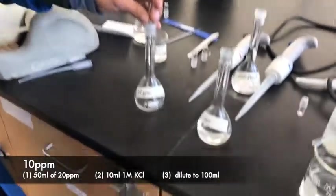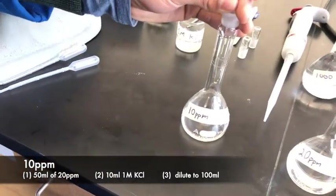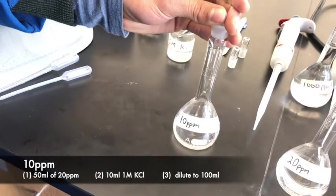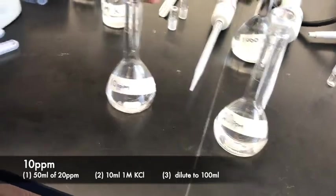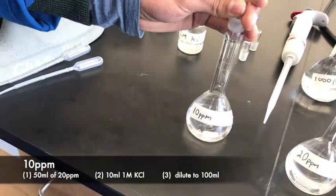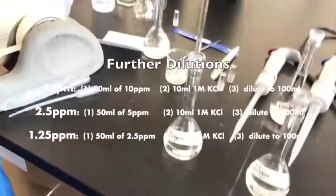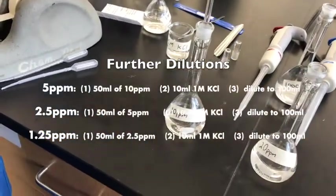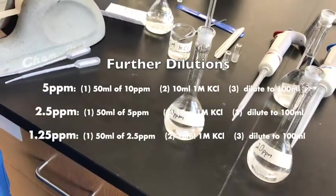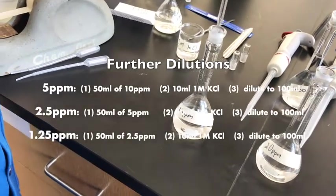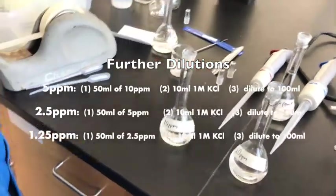So now we took 50ml of 20ppm into a 100ml volumetric flask, and when we diluted to the mark, we have basically diluted this solution by half, which is how we got the 10ppm solution. Once we get the 10ppm, I can dilute it to the mark, pipet out 50ml of that to the next volumetric flask to prepare 5ppm. And then from the 5 we go to the 2.5 and finally to the 1.25ppm. This technique is called Serial Dilution.